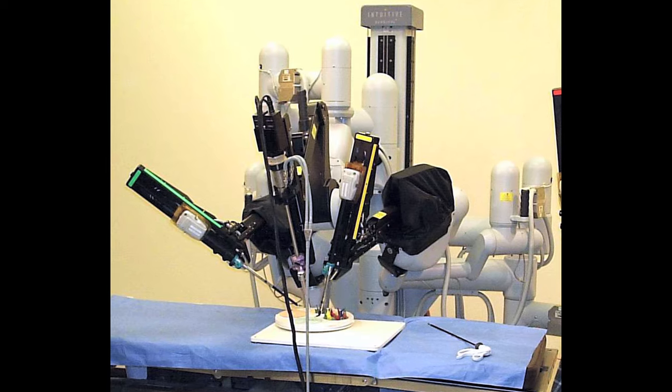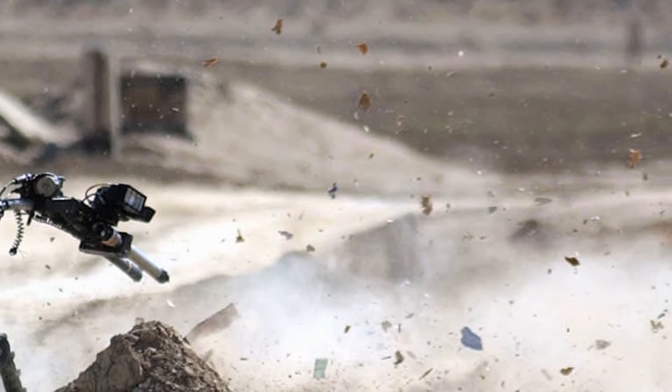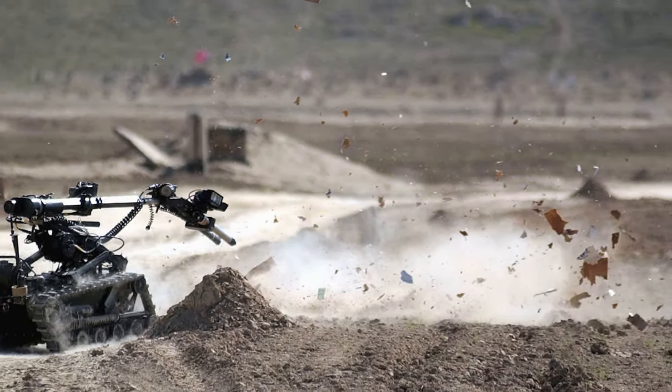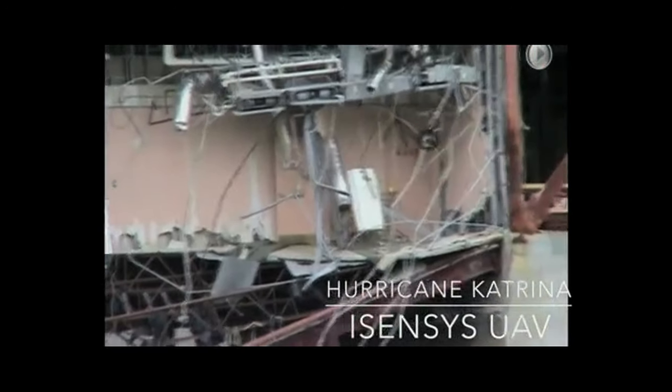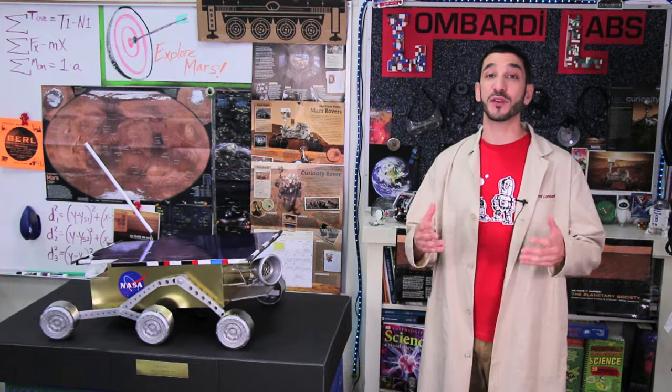But perhaps the most important type of robots are the ones that save lives, not take them. Some robots are used for delicate maneuvers during operations. While other robots are used to find and dismantle bombs so that nobody gets hurt or killed in the process. And some robots are used to search and rescue survivors after a disaster.